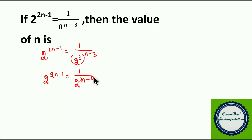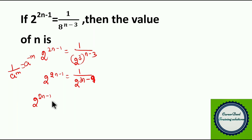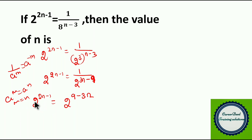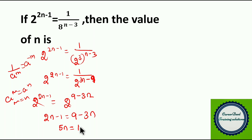You can write 2 power (2n minus 1) equal to 1 by 2 power (3n minus 9). This is because 3 into 3 is 9. Now this is in the format of a power m, which you can write as a power minus m. So when you take it to the numerator, you get 2 power (9 minus 3n). Now since a power m equal to a power n implies m equal to n, the 2 cancels and you can write 2n minus 1 equal to 9 minus 3n. So 5n equals 10, and the value of n is 2.